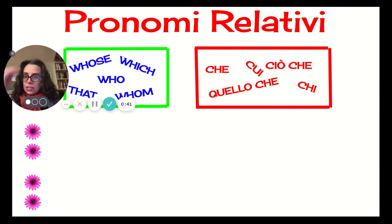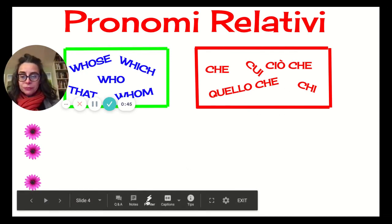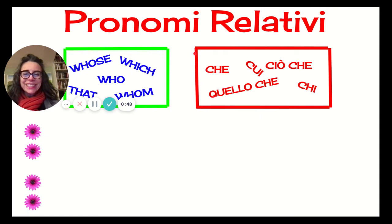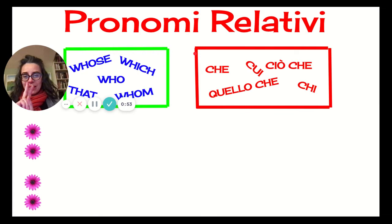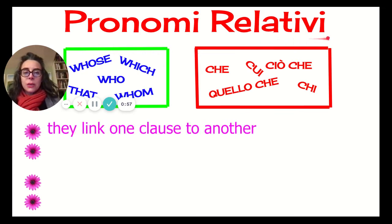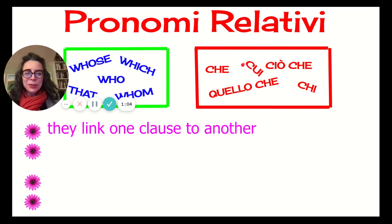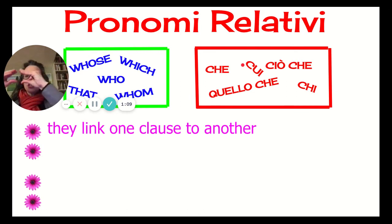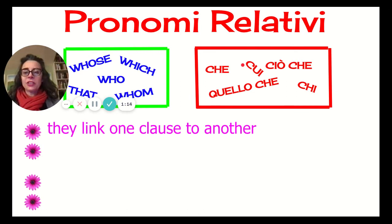We have various options in Italian, as you can see in this box. However, I'm really going to go through the two most common with you today: che and cui. They link one clause to another — imagine each sentence is like a chain, and you're going to put them together and link them.